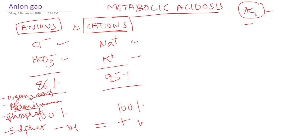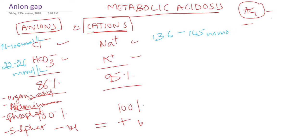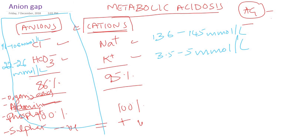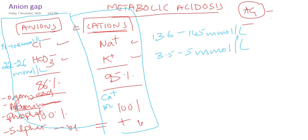The normal value of chloride is around 96 to 108 millimole per litre. Bicarbonate is around 22 to 26 millimole per litre — these are SI units. Sodium is around 136 to 145 millimole per litre. Potassium is around 3.5 to 5 millimole per litre. Whatever anions we have in our body, the same amount of cations will be there. Some cations like calcium and magnesium we are not measured in routine lab, but we can measure them in the laboratory.